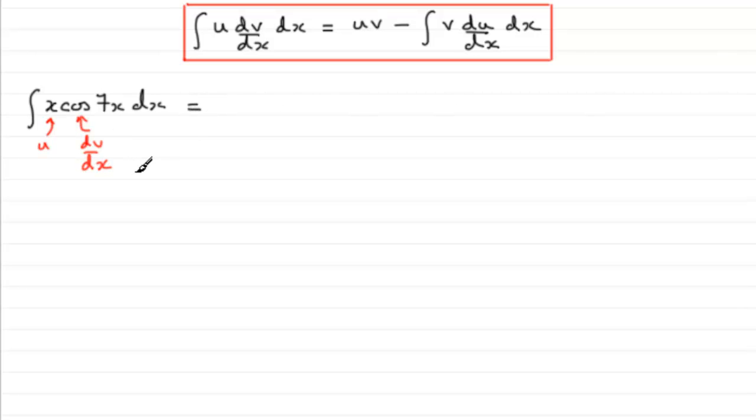So, what do we get? Well, it's the first part u times the integral of the other part, so it's going to be x multiplied by the integral of this part, the integral of cos 7x, which is going to be 1/7 sine of 7x and we should put this in brackets. In fact, we should really put both parts in brackets at this stage, it's always a safe bet.